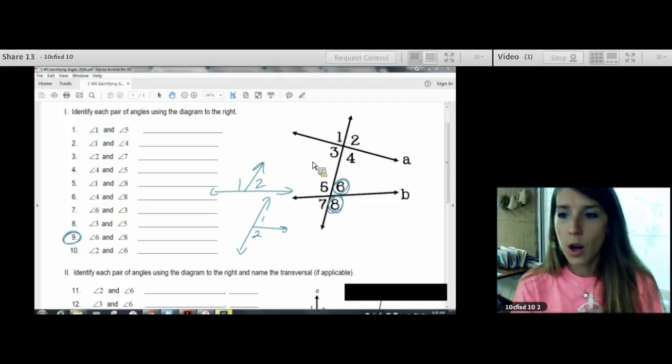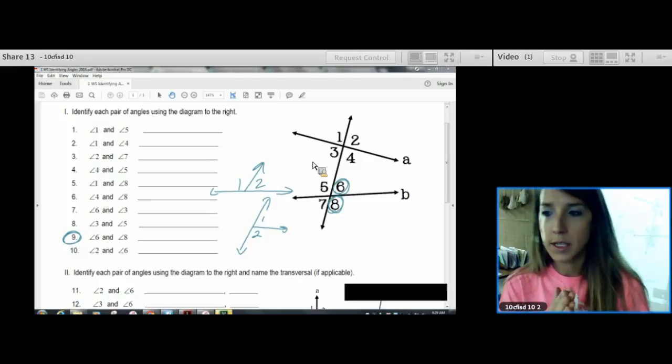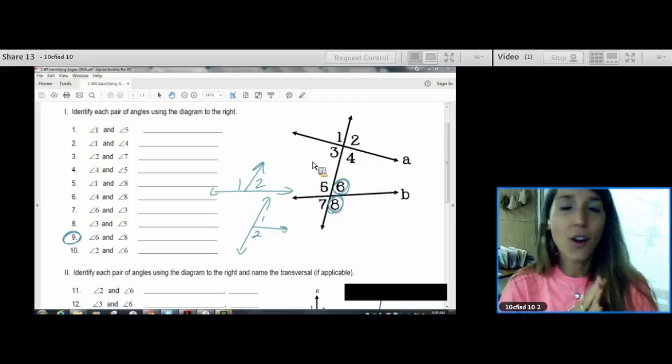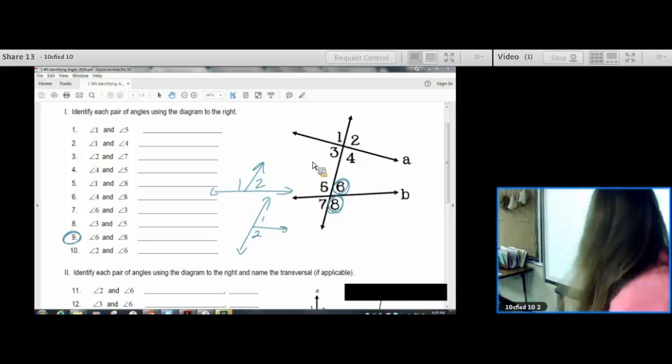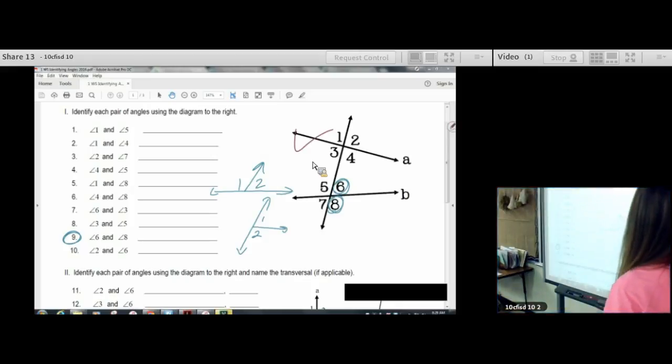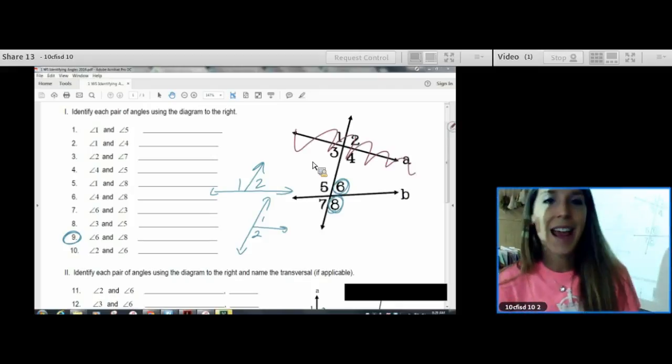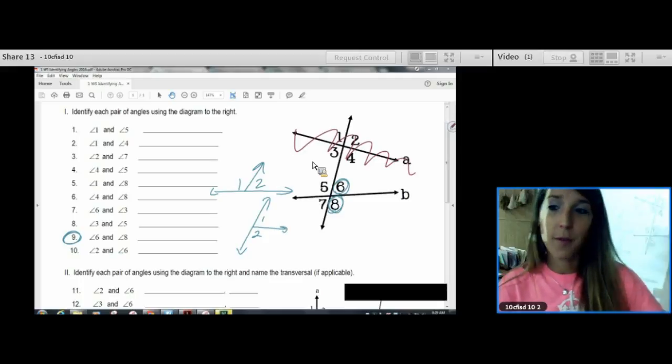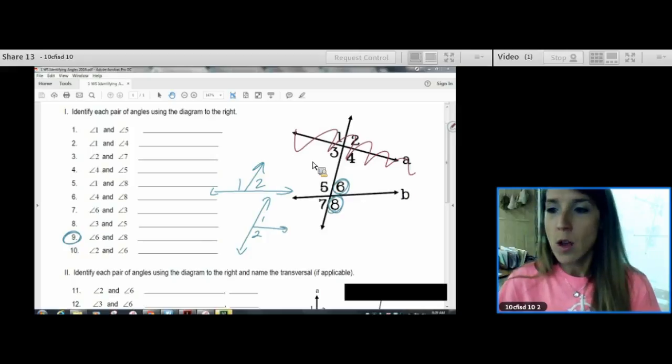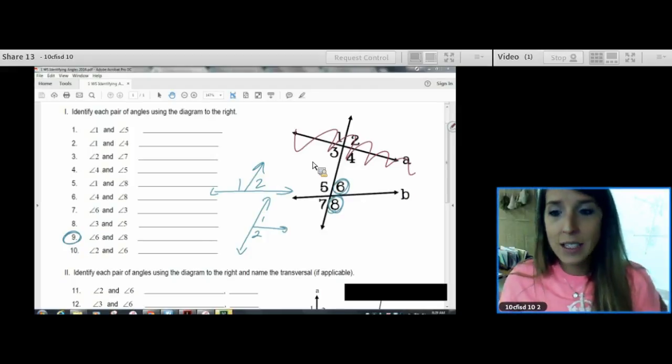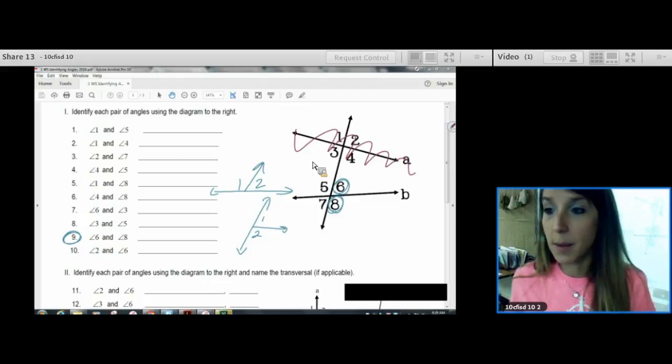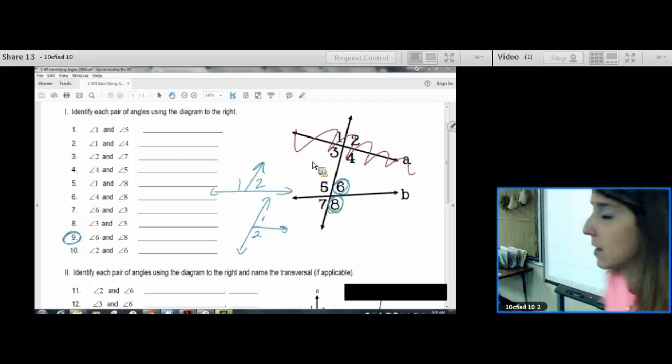Six and eight are not any of our new words, because six and eight are not reliant on a transversal. Do you see how a is not being used at all? So, six and eight is an old vocab word from the angles unit, and it's not vertical angles. Our other choice is linear pair. That is better than saying adjacent, and it's better than saying supplementary. So, we need to call those a linear pair. They form a straight line in this two pair.